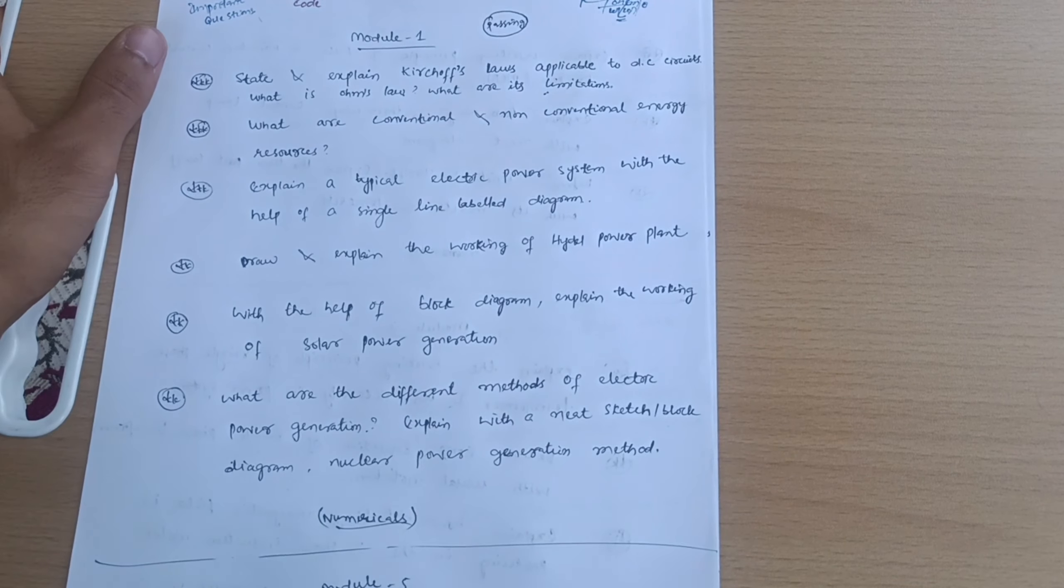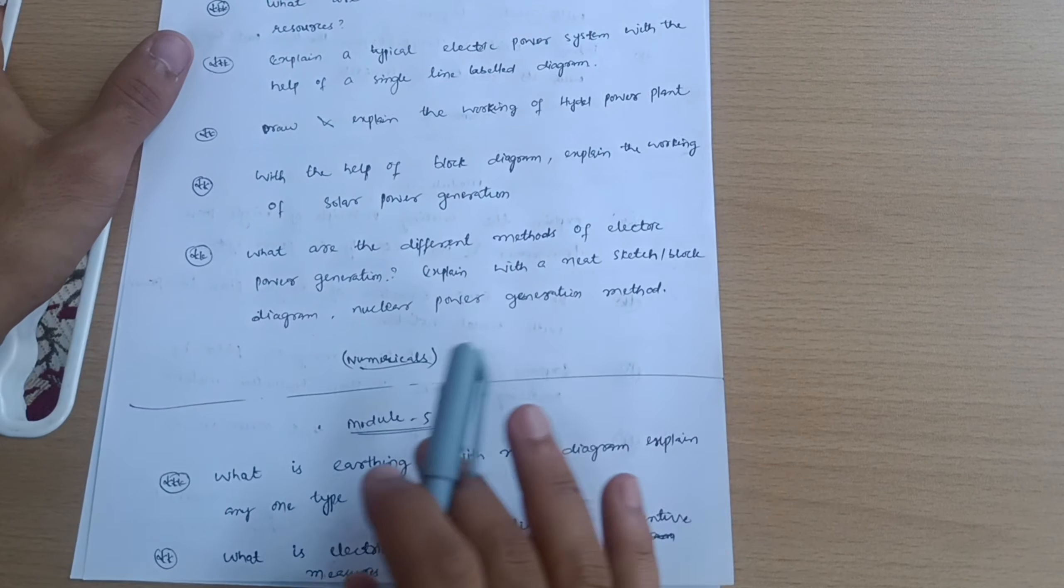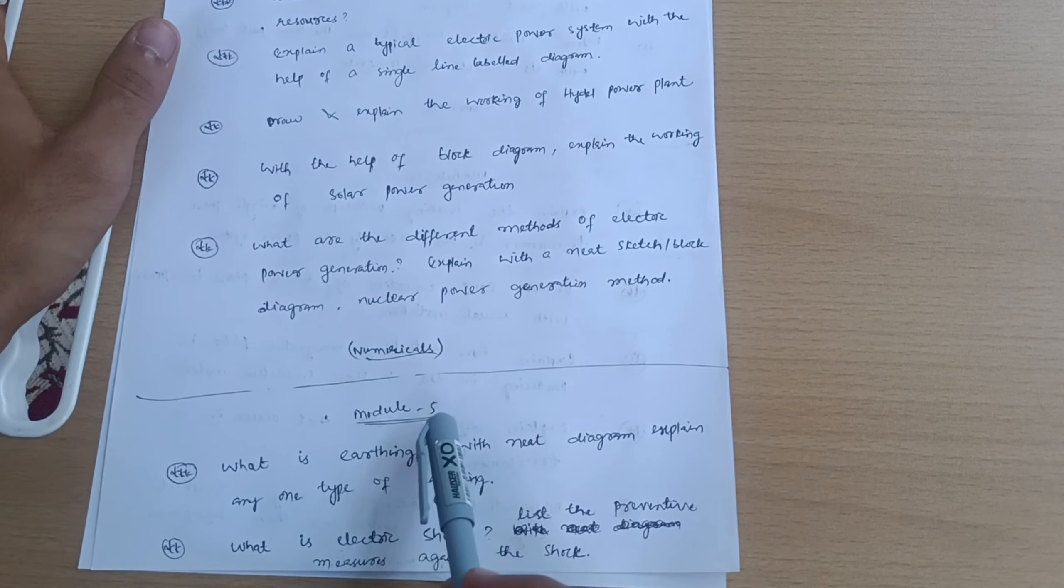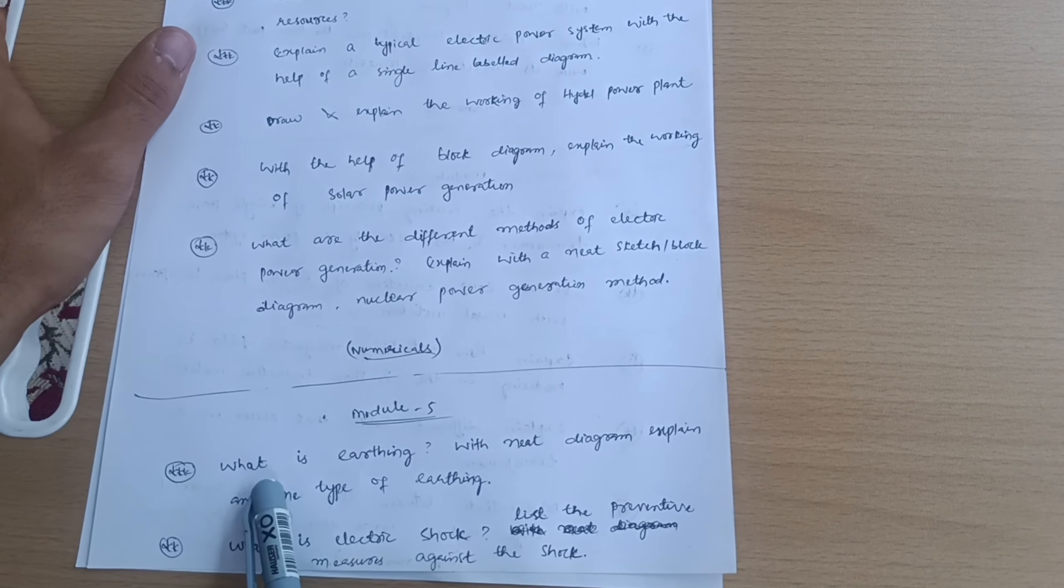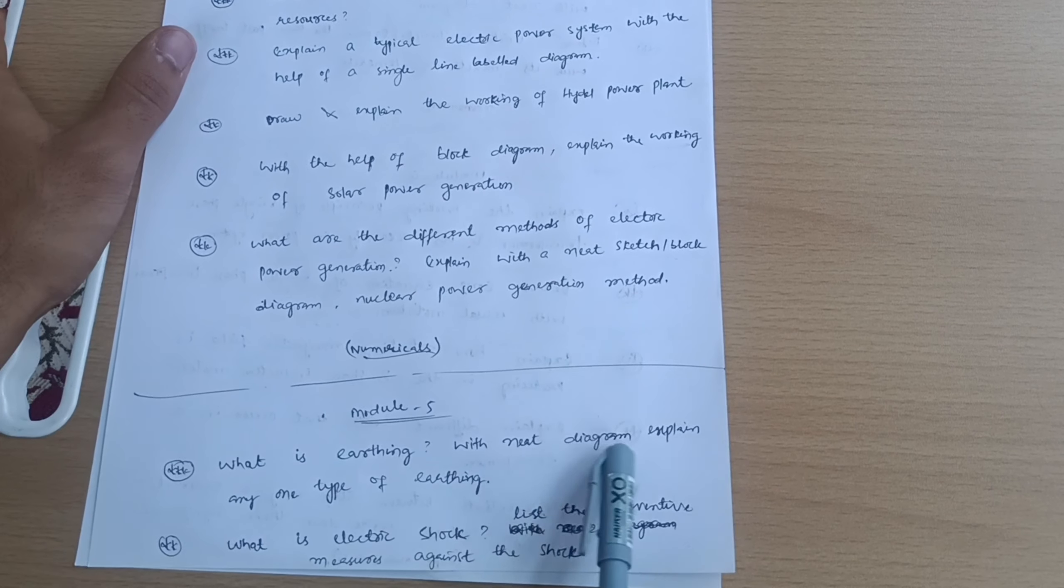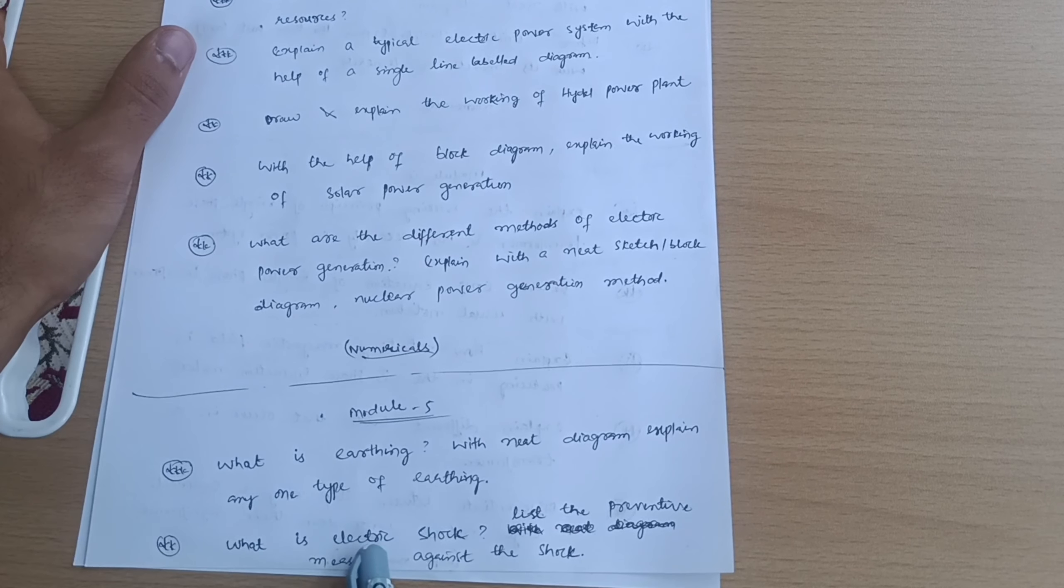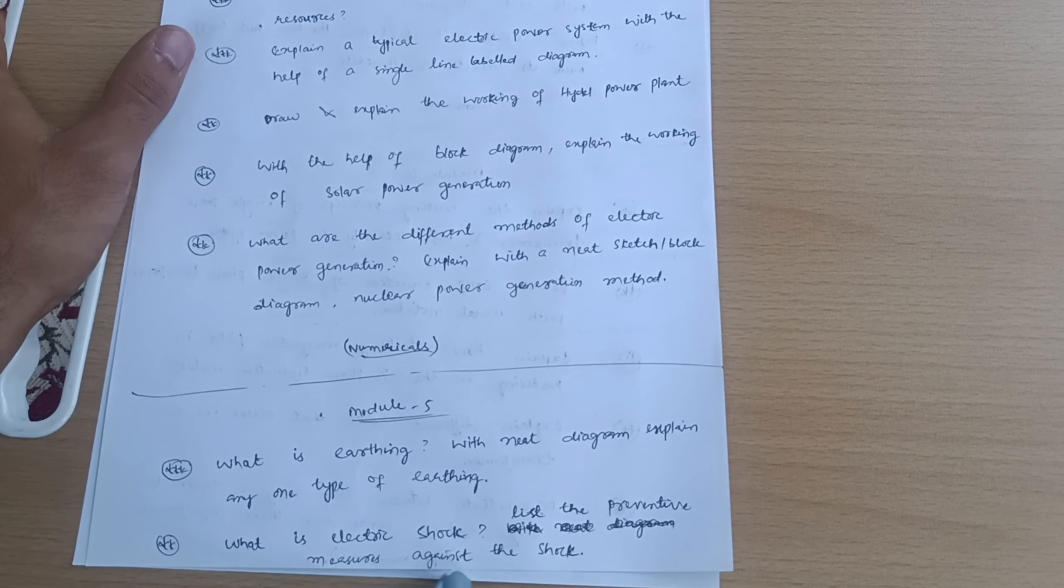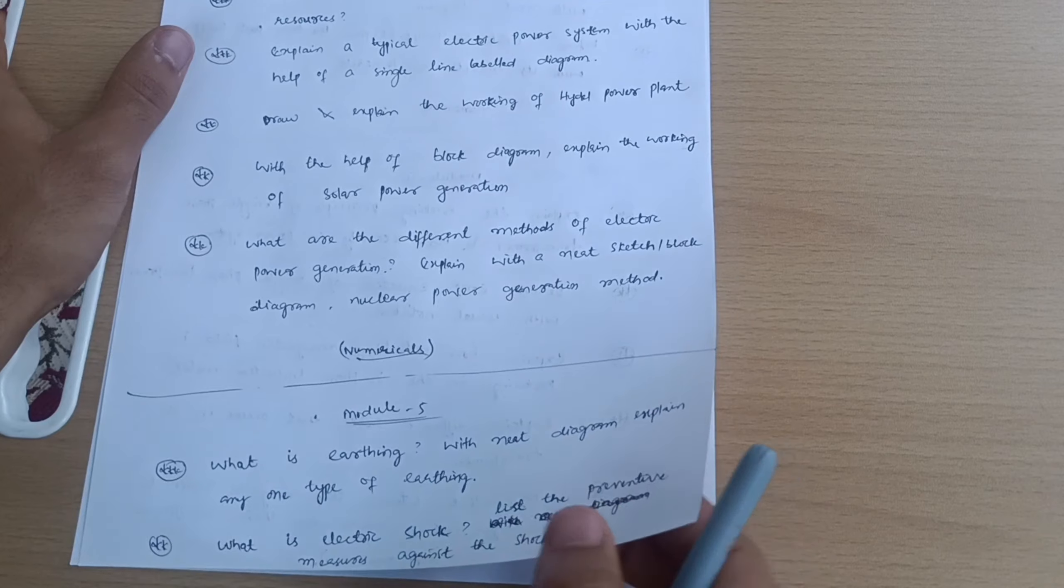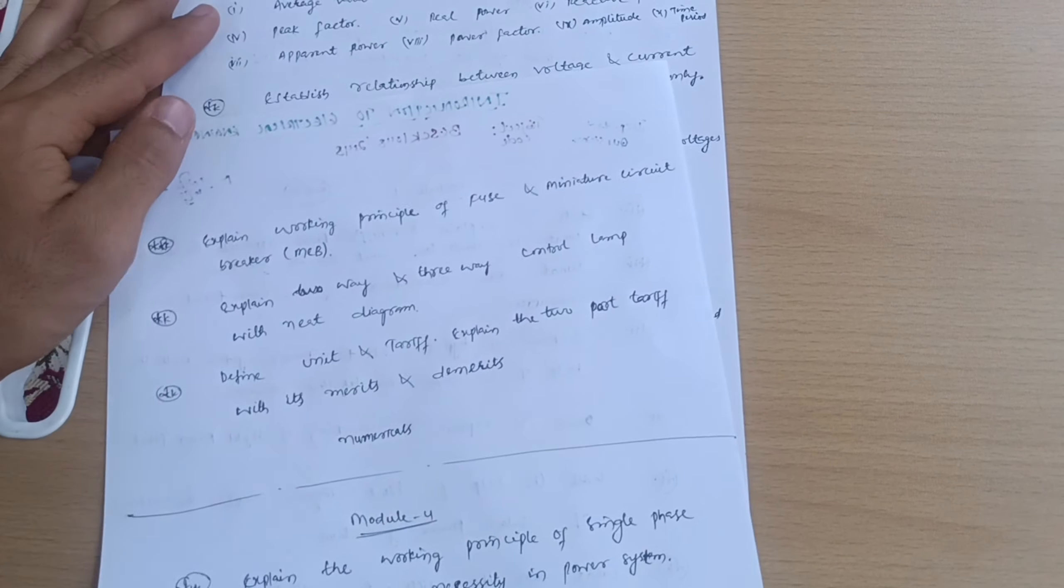Secure 20 marks from Module 1. Next passing module is Module 5. A lot of theory is here. First question: What is earthing? With neat diagram explain any one type of earthing. What is electric shock? List the preventive measures against electric shock.